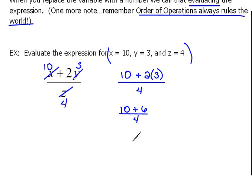So 10 plus 6 would be 16 over 4. And now we can finish evaluating. 16 divided by 4 is 4. So this is what it means to evaluate an expression. We plug in the numbers that they give us, and then we simplify or do everything we can to bring that down to a single number or as simple as we can possibly make it.